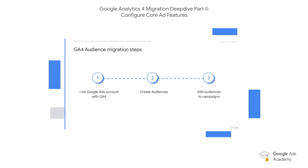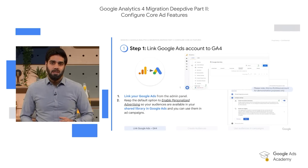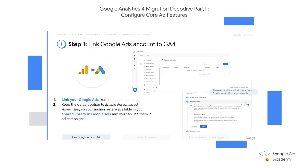If you have your Google Ads and GA4 account open, you can follow along. If not, you can come back to this video later and play it at your own pace. First and foremost, link the Google Ads account to GA4. Go to the admin panel in your GA4 account, then go to product links and click Google Ads links. Press the link option, then choose your ad account and make sure to enable personalized advertising so that your audiences are available in Google Ads library.